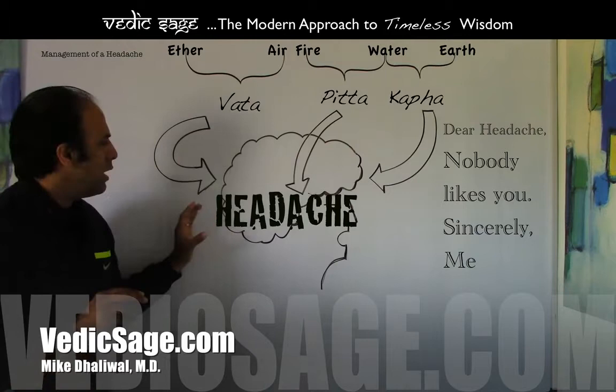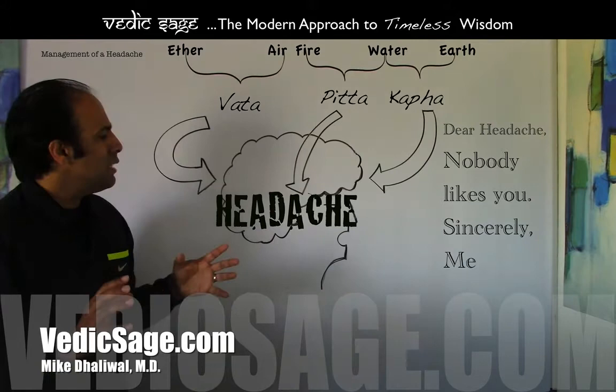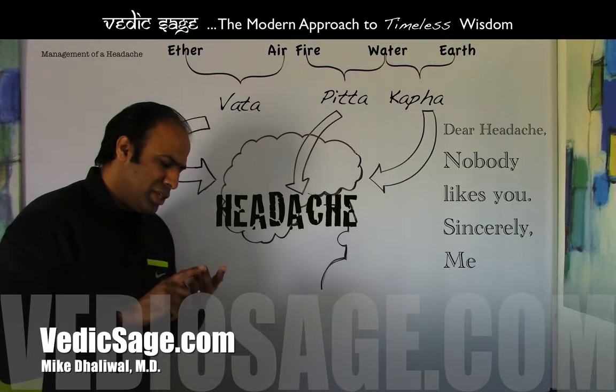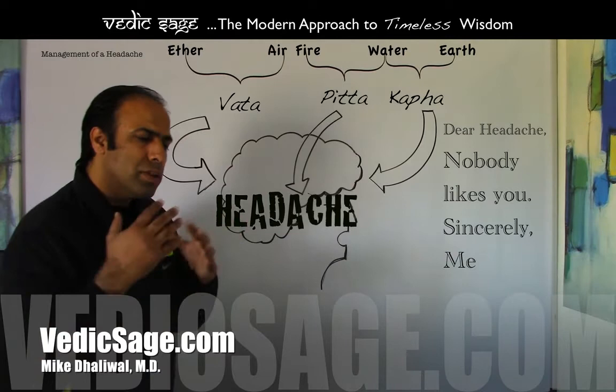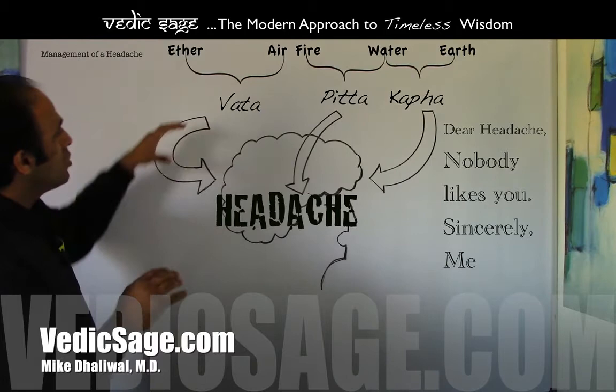Often these vata type headaches are experienced in the occipital region of the brain or the base of the brain, and are characterized as a throbbing, shooting and even big pain. Likewise, vata type headaches are often associated with constipation, indigestion and abdominal pain. Another factor that Ayurveda takes into consideration is the mind and emotions within the individual. For example, vata individuals who have unresolved underlying emotions of fear, anxiety and insecurity — this is thought to also contribute to a vata type headache.